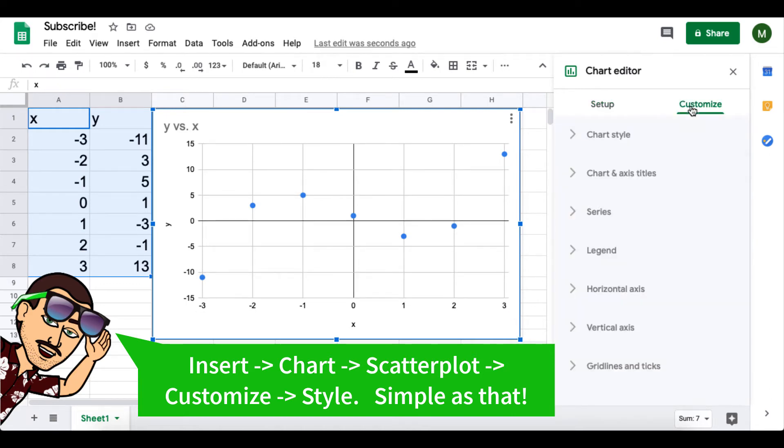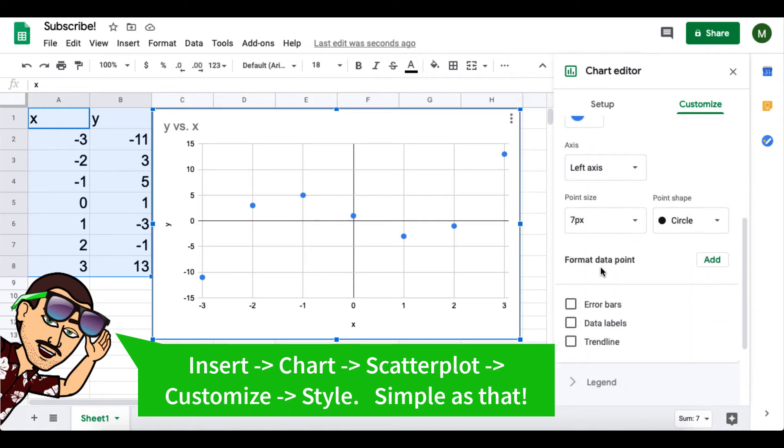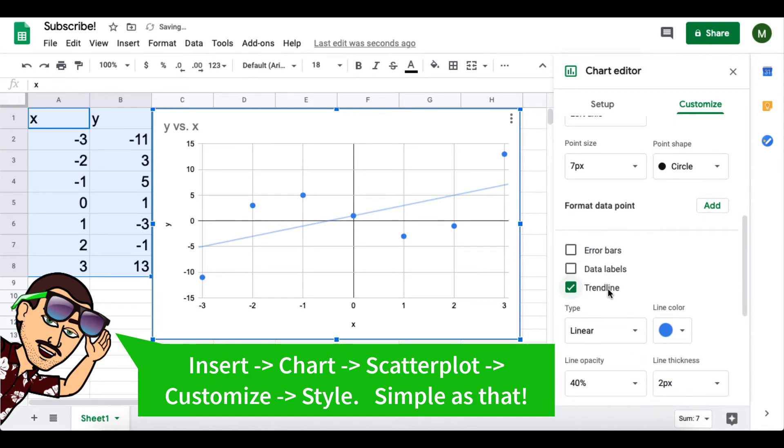It goes up, down, and then back up. So to find our function for the best fit, we go to series and trend line. And now we just kind of play around with our options.